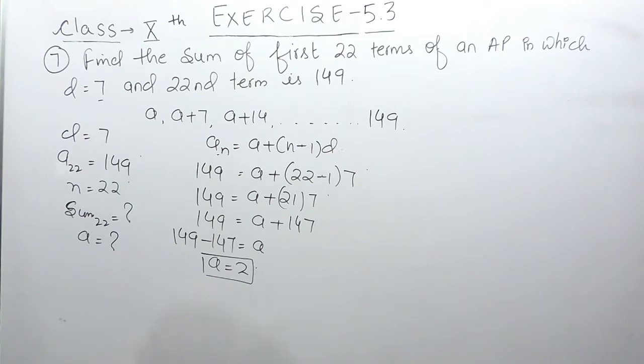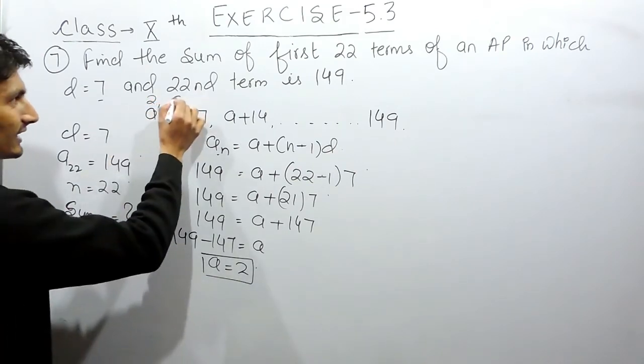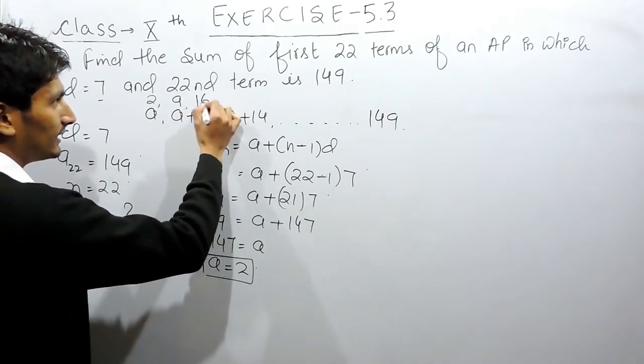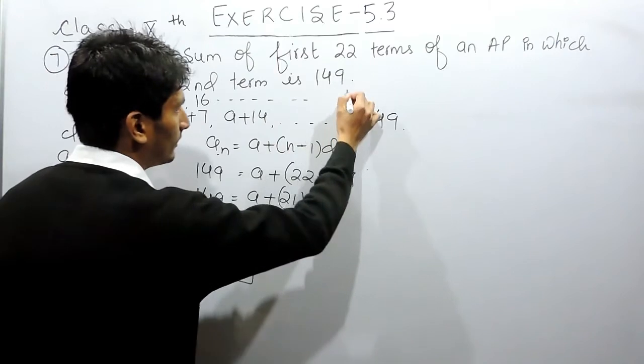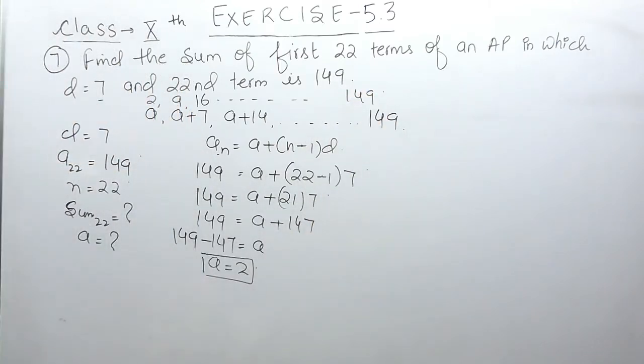So we can say that the first term is 2, the second is 9, the third is 16, and so on till 149. Now we have to calculate the sum of this AP.